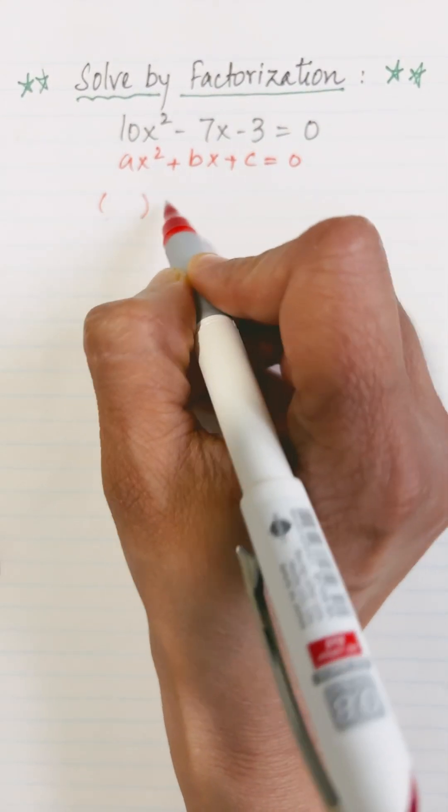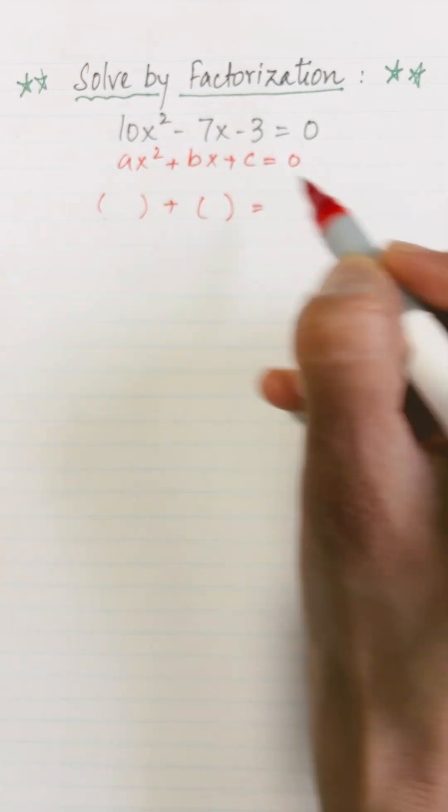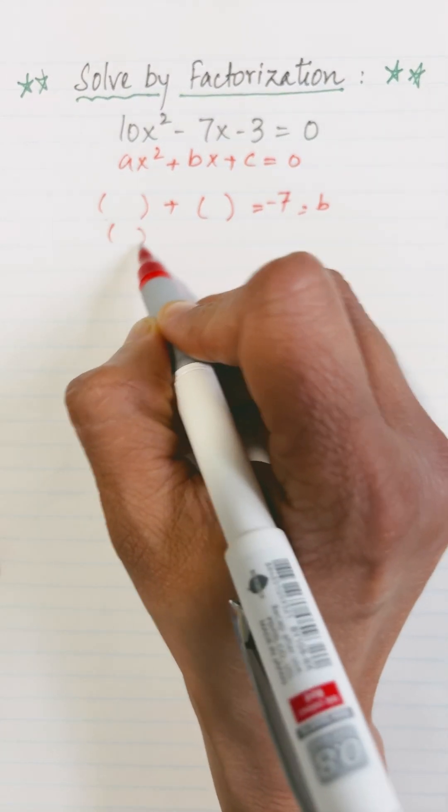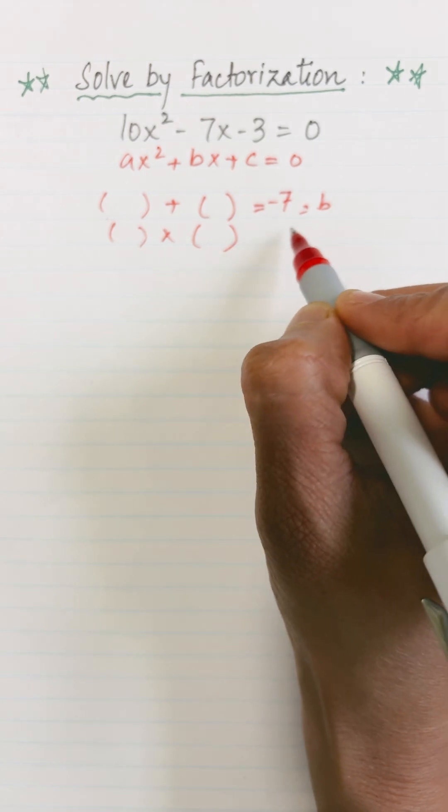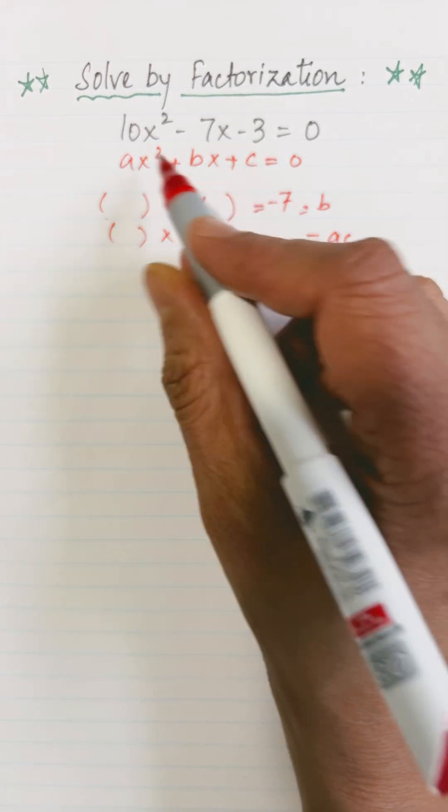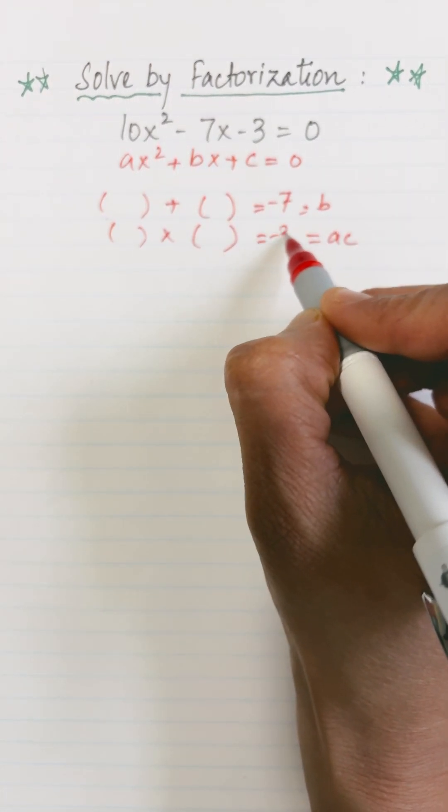I am looking for two numbers which when added give me the middle term b, that means -7, and the same set of numbers when multiplied give me the product of ac, that means 10 times -3 as -30.